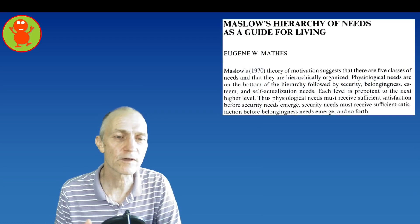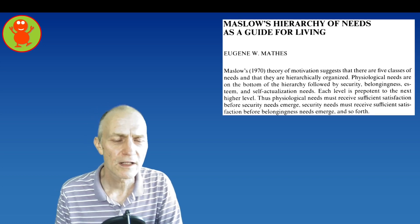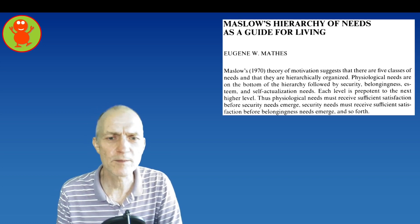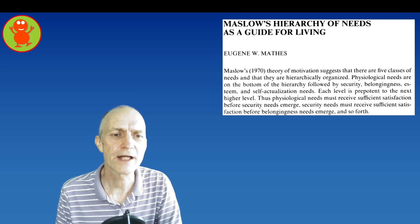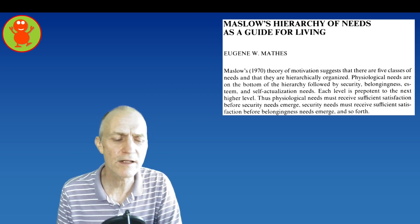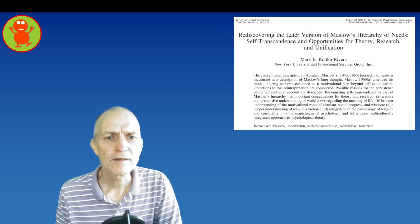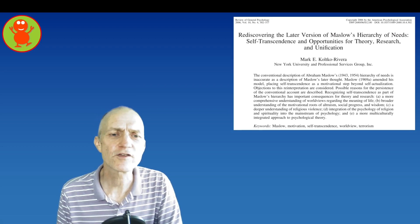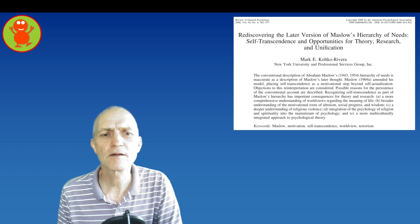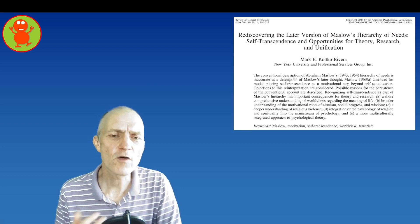Like for example Maslow's Hierarchy of Needs as a Guide for Living. Pause the video for a moment maybe to read the beginning of that article. This is from 1981, you can find it on the internet. It's in the field of humanistic psychology. This article in the Review of General Psychology is also really interesting.